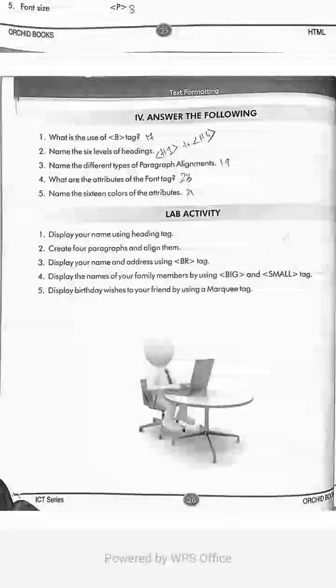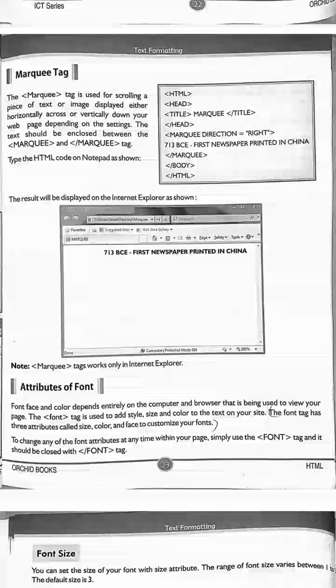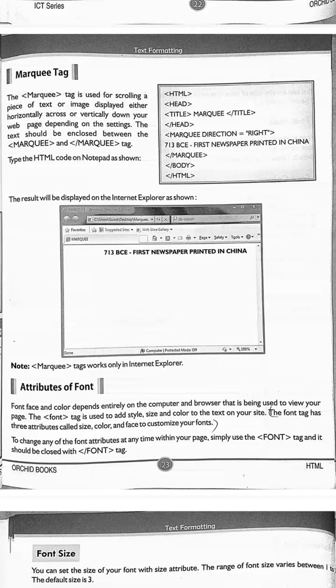What are the attributes of the font tag? Refer to page number 23. Under the title 'Attributes of Fonts,' the first paragraph's last line states: the font tag has three attributes — font color, font face, and size. So size, color, and face are the attributes of the font tag.